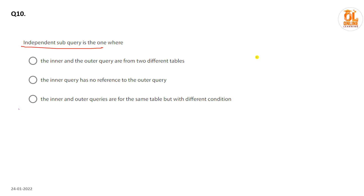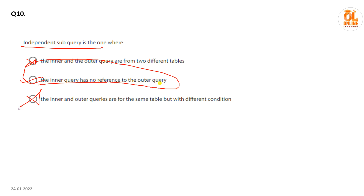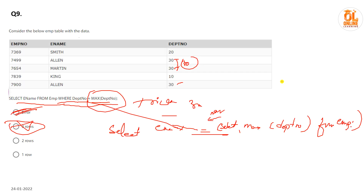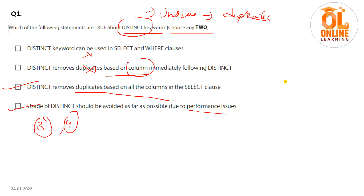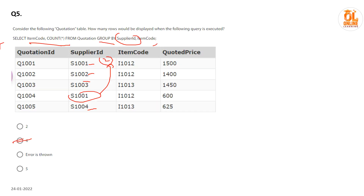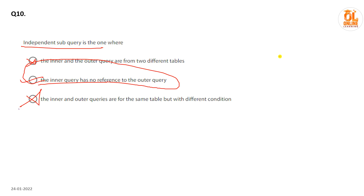Question 10 is again about independent subqueries. The inner query has no link or reference to the outer query — that is the definition. The statement that the inner and outer query use two different tables is not necessarily true. The first option — the inner query has no reference to the outer query — is the correct definition. Those are all ten questions. Calculate your score out of ten to know where you stand. Only a few days are left, so prepare well. All the best!